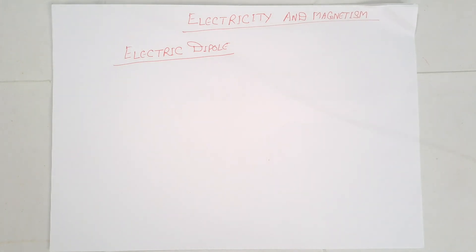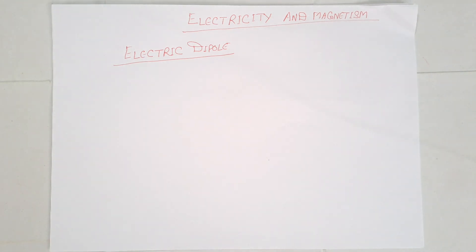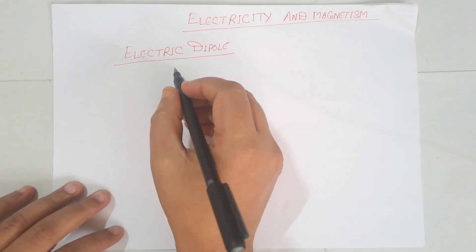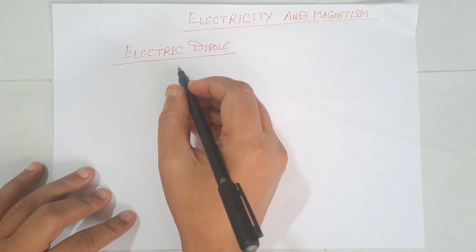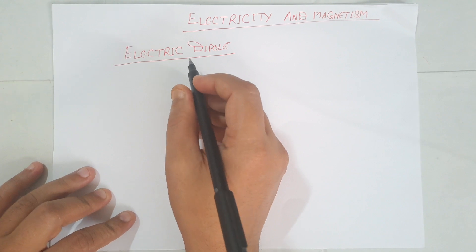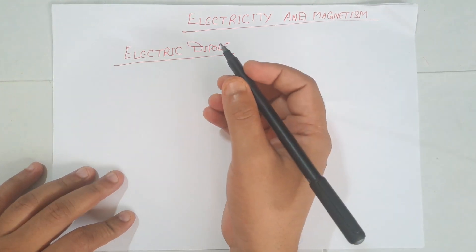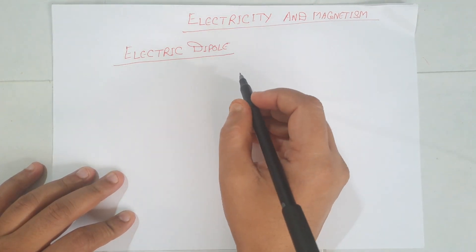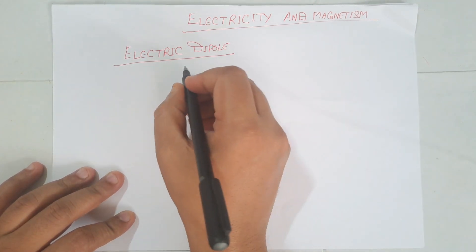Welcome to R.A. Watt Center for Theoretical Physics. Today we are going to learn about the electric dipole. What is the electric dipole? An electric dipole is a system of two equal in magnitude but unlike charges.